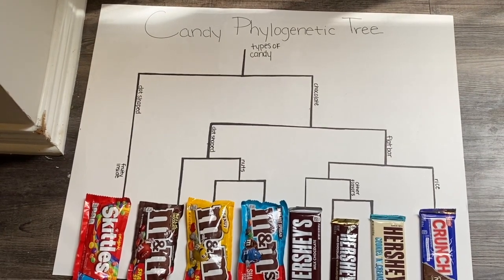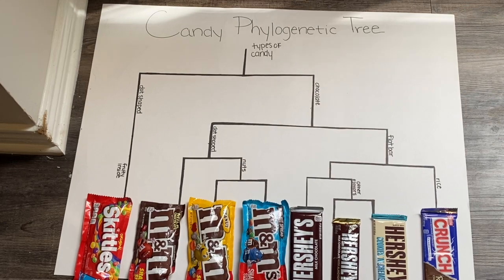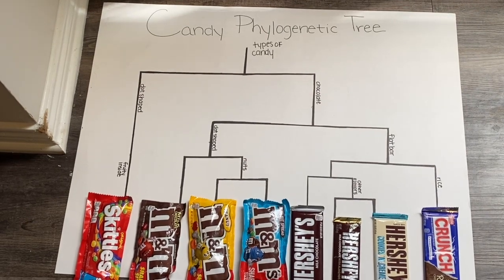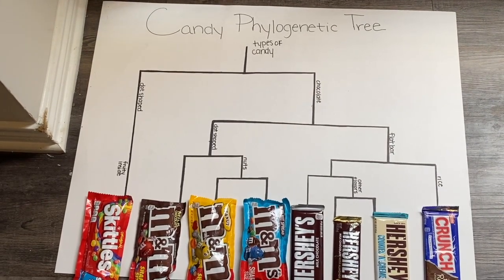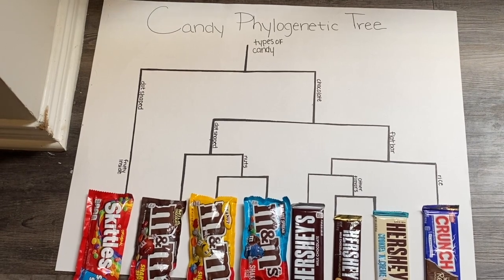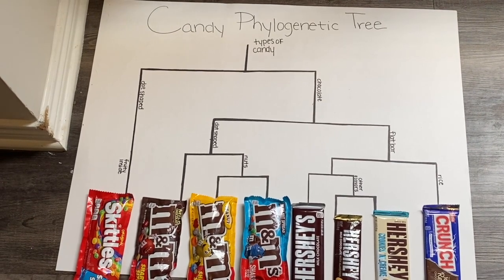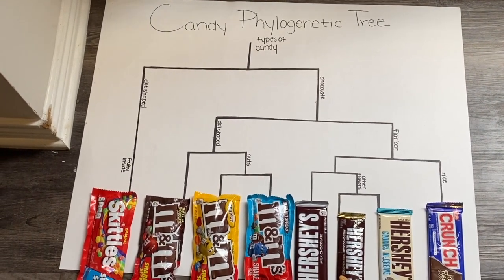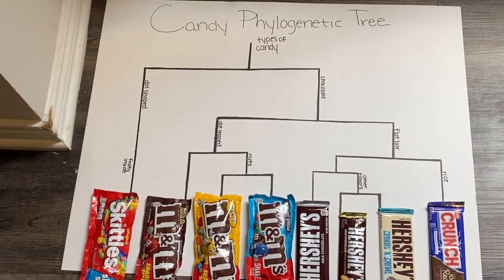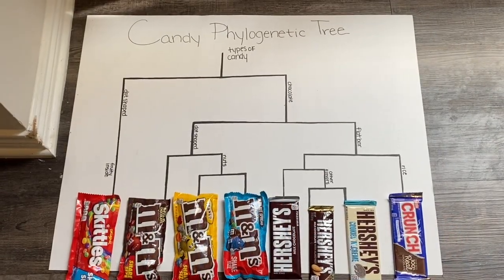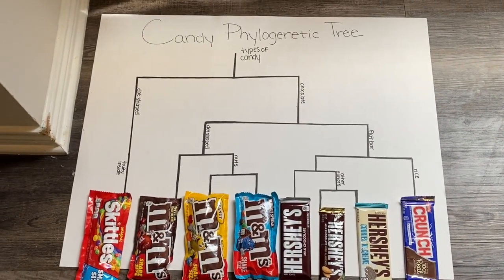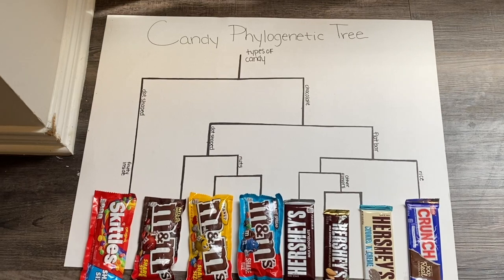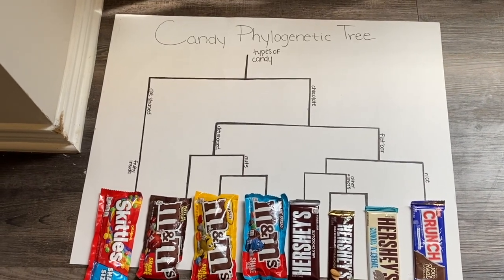In this example, the tree represents the relationships between eight different candies: Skittles, Original M&Ms, Peanut M&Ms, Hazelnut M&Ms, Hershey's, Almond Hershey's, Cookies and Cream, and Crunch Bars. I've decided to use different types of candy to show how a phylogenetic tree could be set up using phenotypes and flavors of each candy.